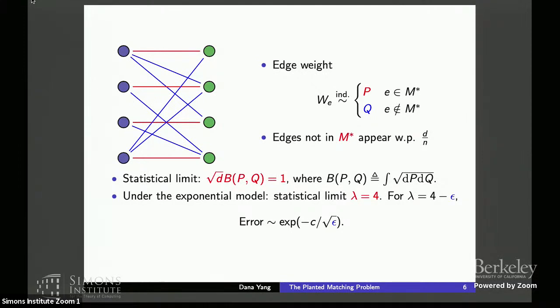Moreover, we also show that near this statistical limit, so when lambda is equal to 4 minus some small epsilon, we're able to characterize the average proportion of mismatched edges to be scaling as e to the minus some small constant divided by square root epsilon, which shows that the phase transition here is infinitely smooth.